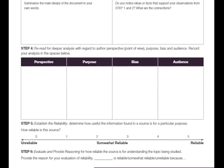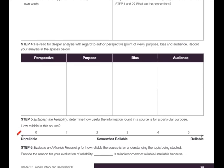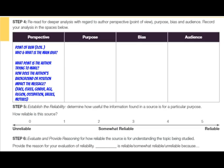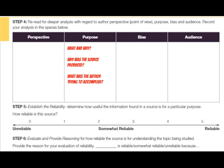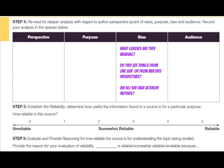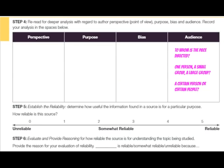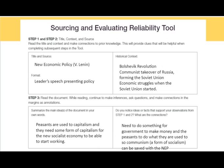Then you have step four where we look at the perspective, purpose, bias, and audience. Then you give it your ranking and write your reason to evaluate it. Remember, we already looked at what you're looking for with perspective, purpose, bias, and audience, and we went through a model of how we would take it apart, beginning with step one and two.